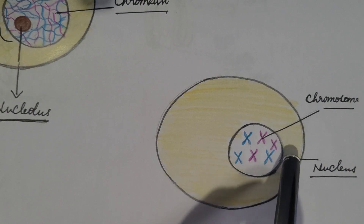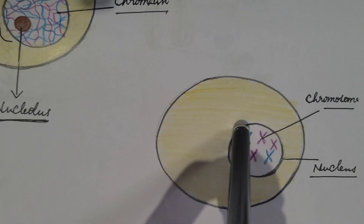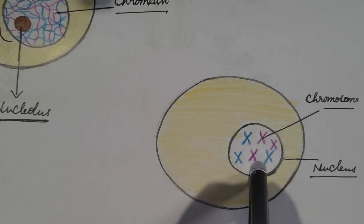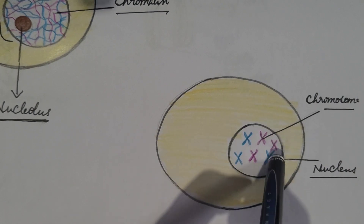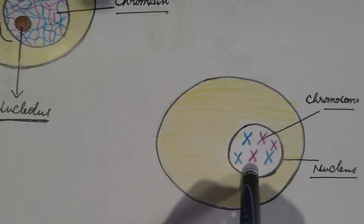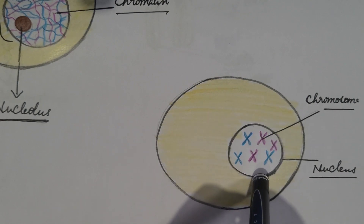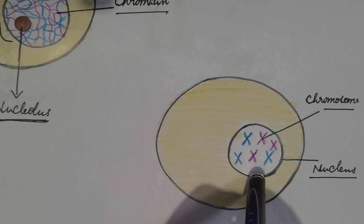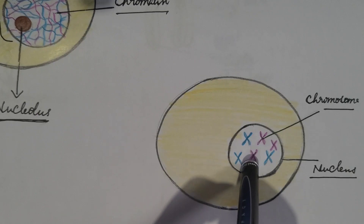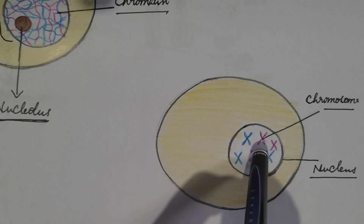During cell division, chromatin condenses to form chromosomes. At metaphase, chromosomes are highly condensed and the two sister chromatids of a chromosome are attached to each other at the centromere.